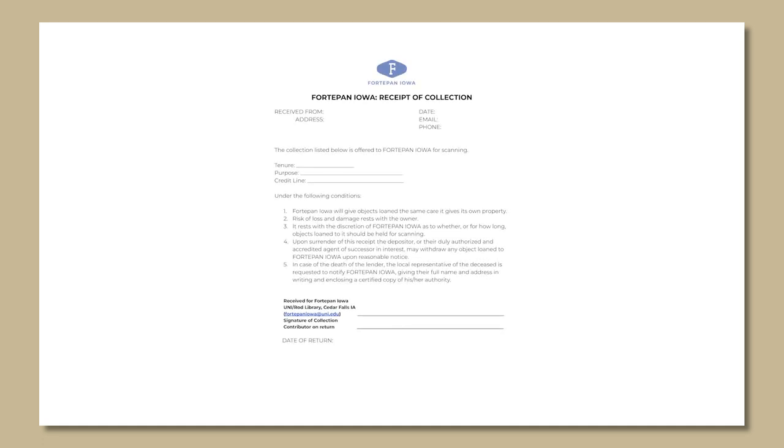We have three forms that we use for the Fort Upon Iowa platform. The first is the receipt of collection form. This documents the contents of a collection when it comes in, allowing us to keep track of all content. It contains the conditions of the agreement and an inventory list of every item on loan.